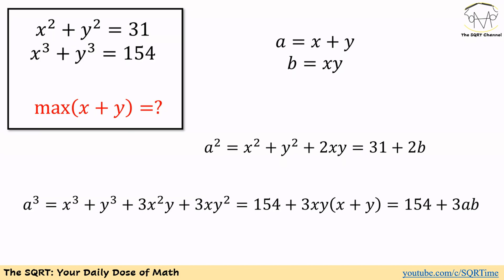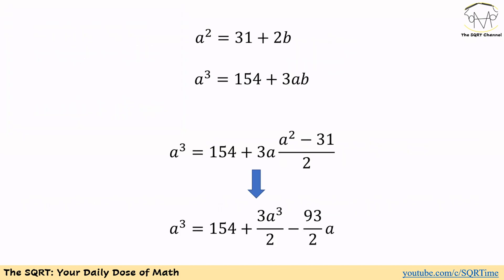Now we have a squared equals 31 plus 2b, a cubed equals 154 plus 3 times ab. Let's use b from the first equation in the second equation.